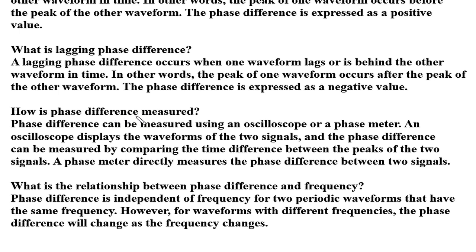How is phase difference measured? Phase difference can be measured using an oscilloscope or a phase meter. An oscilloscope displays the waveforms of the two signals and the phase difference can be measured by comparing the time difference between the peaks of the two signals. A phase meter directly measures the phase difference between two signals.